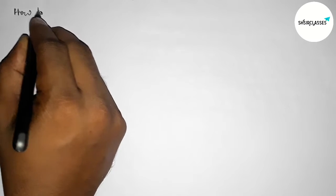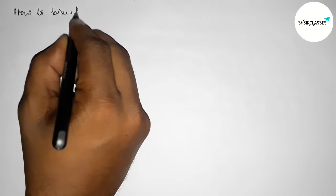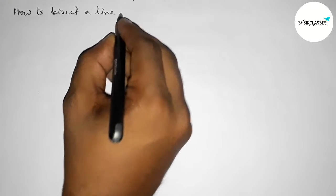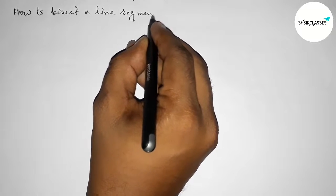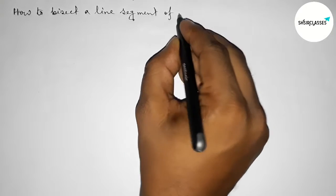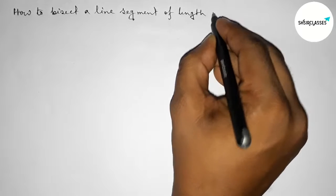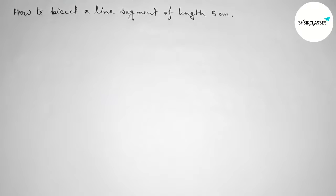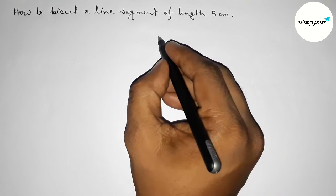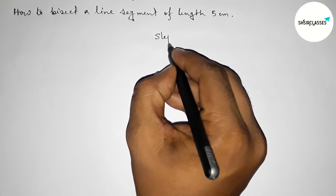Hi everyone, welcome to Essay Share Classes. Today we're discussing how to bisect a line segment of length 5 centimeters by using a compass. So let's start the video. First of all, leaving here some space to write down the steps of construction.